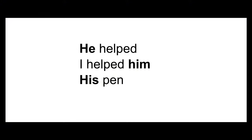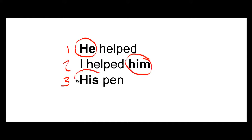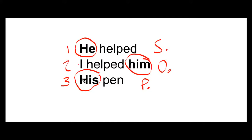So before we start lesson 9, I want everyone to look at this. These are three English sentences. The pronoun 'he', 'him', and 'his' is the same masculine pronoun, but because of its position in the sentence, the way it is written has changed. Here it's 'he helped' where 'he' is the subject, and then when it's the object, it's 'I helped him', not 'I helped he', and then when it's in possession of an object, it's 'his pen', not 'he pen'.